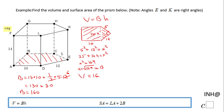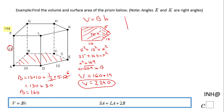We can go back and find the volume now. The volume is going to be 160 times the height, which is 14, and that will be 2240 cubic units. Now we can move to the surface area.